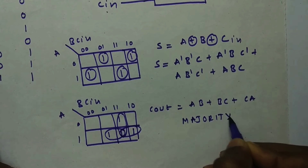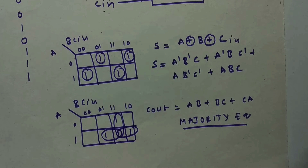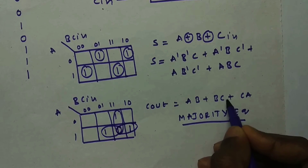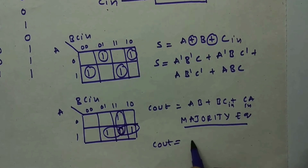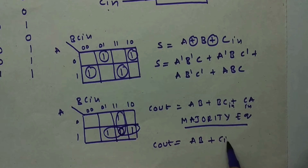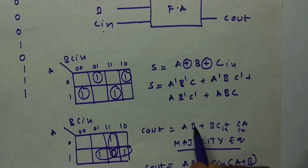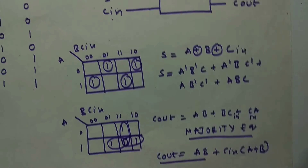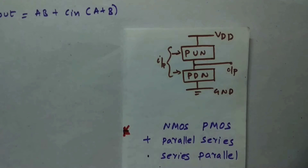Now I'm going to modify the Cout expression a little bit. Taking Cin common: Cout = AB + Cin(A + B). I have my expression for Cout and my expression for Sum. I'm going to draw Cout first, and then use Cout to draw Sum — this will reduce the number of transistors.